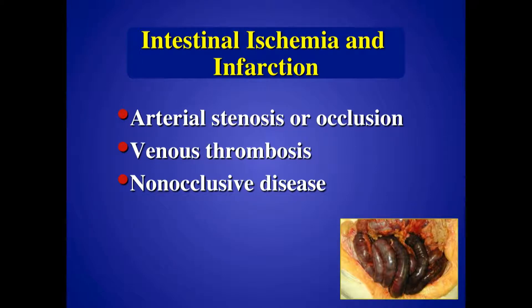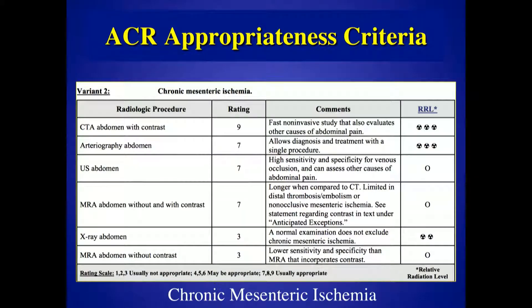Intestinal ischemia can have different etiologies — arterial disease, venous thrombosis, or just a low flow state. Typically what we're looking for is evidence of arterial stenosis, occlusion, or venous thrombosis, and we can do this on our sonographic exams. The ACR appropriateness criteria puts ultrasound right below CT angiography for these diagnoses, on par with arteriography and MRA.